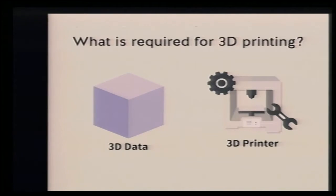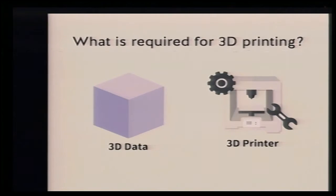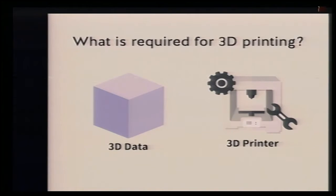You can use a 3D printer service bureau like Shapeways, Sculpteo, or Rinkaku. Regarding 3D data, you can get it in multiple ways. For example, you can buy 3D data from some website, or you can download it from another website. Or you can create your own 3D data by yourself. Today, I'm going to focus on creating 3D data.